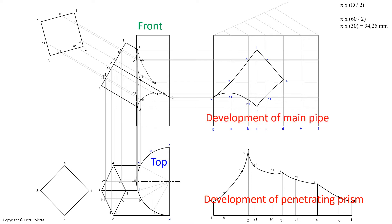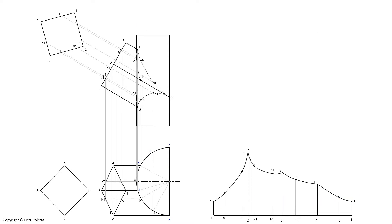In today's lesson, we're going to do the development of the main pipe. We can take the base of our main pipe and draw a light construction line across to the open space. Because the development can be projected out from the main pipe at 90 degrees, we can also take the height of the main pipe and project it out. Then we draw a vertical line to start the beginning of our development, making sure we have enough space open to the right hand side.